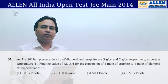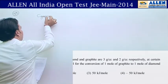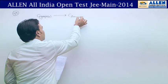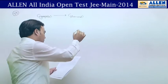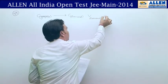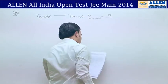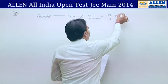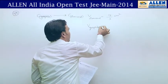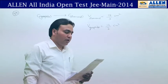Question number 33 is from the chemical thermodynamics chapter. For 1 mole of diamond, volume equals mass upon density: 12 upon 3, giving units of cm³. For graphite, volume equals 12 upon 2.